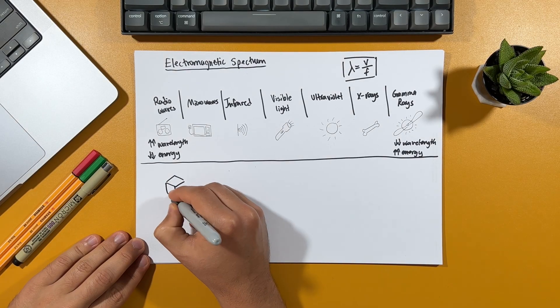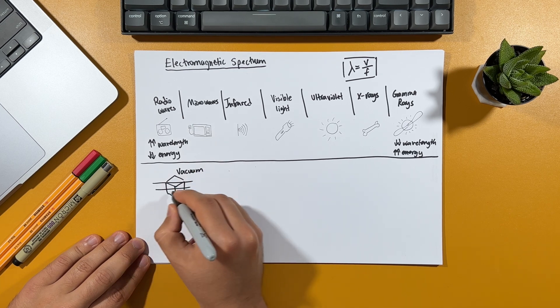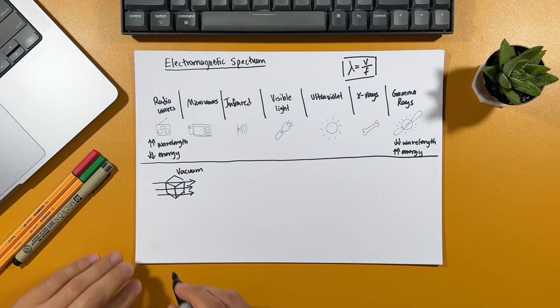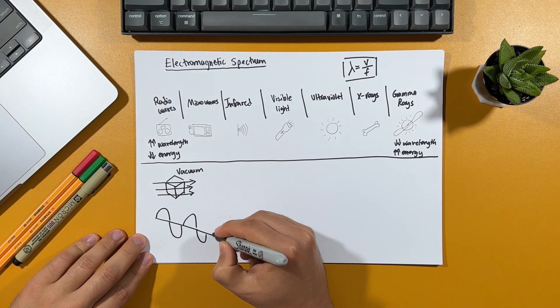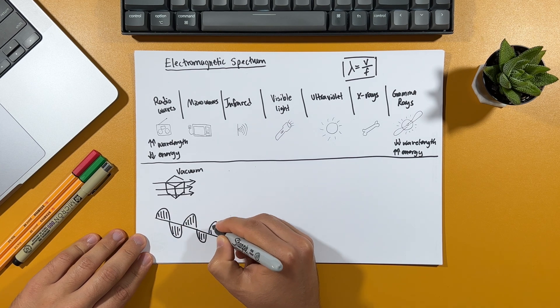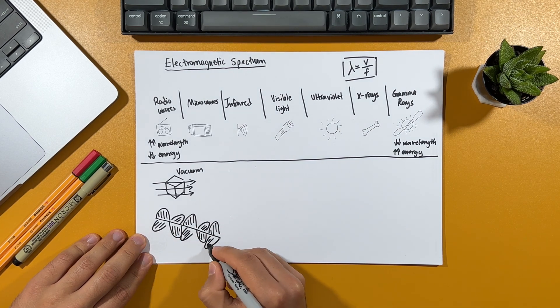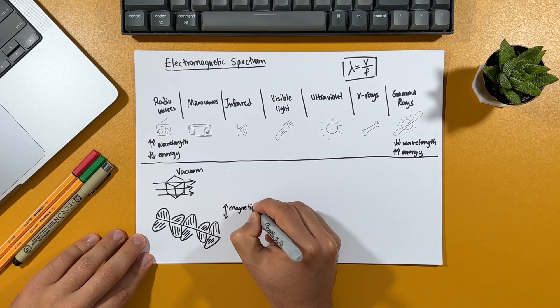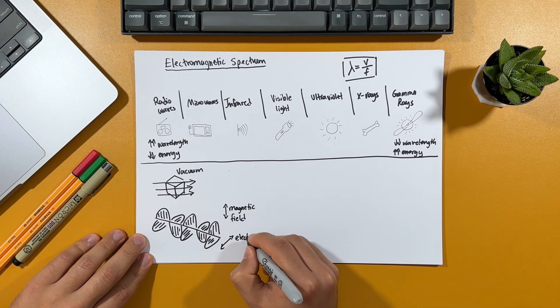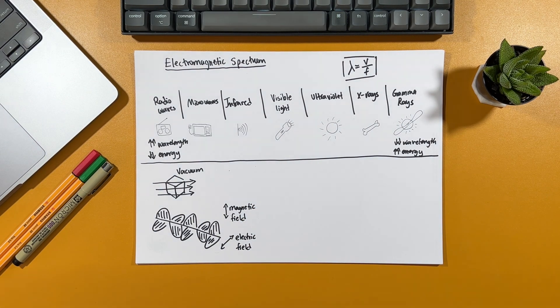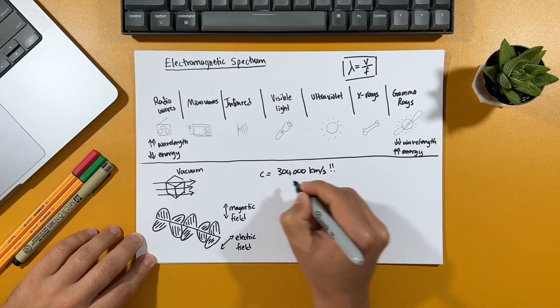For example, they can travel through a vacuum that is empty space with absolutely nothing in it. They're transmitted or moved from one place to another, by electric and magnetic fields that are oscillating or swinging at right angles from each other, hence the electromagnetic name. And when they're traveling in a vacuum, they go at the speed of light, which is approximately 300,000 kilometers per second. And to put that into perspective, that's like doing laps around our planet, seven and a half times with each second that passes. It just doesn't make sense to the human mind how mind-blowingly fast that is.